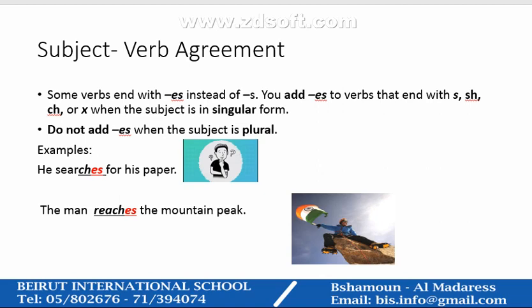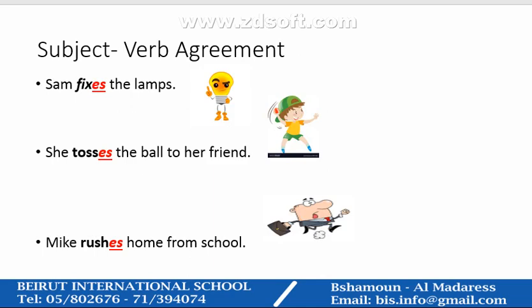Let's see further examples. Sam fixes the lamps. Sam is a singular subject — there's only one Sam. So "fixes" takes "-es" in the present tense because it ends with "-x". She tosses the ball to her friend. "Tosses" takes "-es" because the subject "she" is singular, and "tosses" ends with "-s". Mike rushes home from school. Mike is one person, so the subject is singular. "Rushes" ends with "-sh", so it takes "-es".